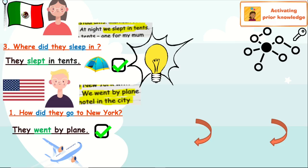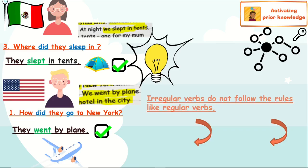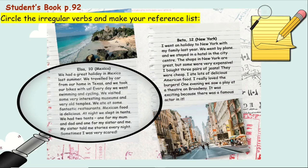'We went by plane.' So they went by plane. We can notice here that the verbs were kind of strange — 'slept' rather than 'sleep', 'went' rather than 'go'. Irregular verbs do not follow the rules like regular verbs: sleep becomes slept, go becomes went. Let's look for more irregular verbs from the text. We're going to circle the irregular verbs and make our own reference list.